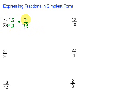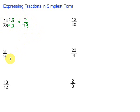Now, the factors of 7 are 1 and 7, and 18 is not divisible by 7. It's divisible by 1, but that means we've found our simplest form, because the GCF of these two numbers is just 1. So it's simplified.